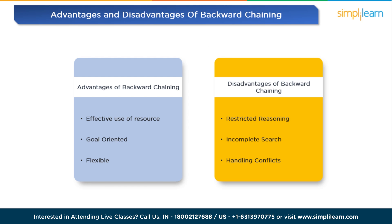Moving to the advantages and disadvantages of backward chaining. Backward chaining offers optimal resource usage by efficiently concentrating on essential rules or requirements for goal achievement, resulting in time and computational savings. It is goal-oriented, commencing from predefined objectives and tracing back to identify relevant supporting conditions or rules. Additionally, its adaptability allows easy customization across various applications, showcasing a broad range of problem-solving capabilities.